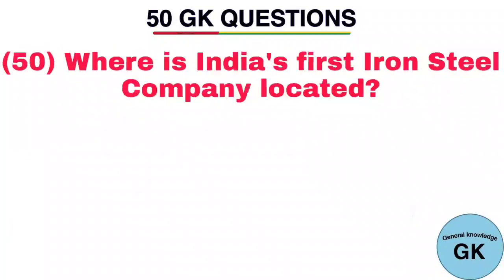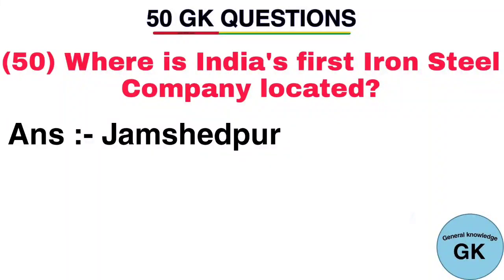Question number 50. Where is India's first iron steel company located? Answer: Jamshedpur.